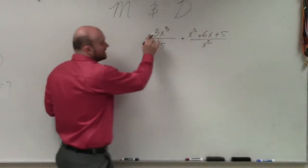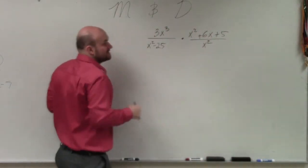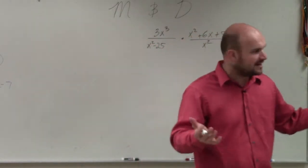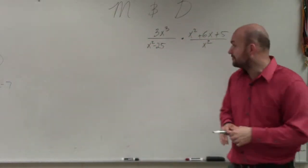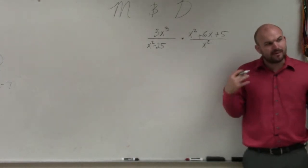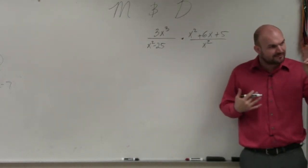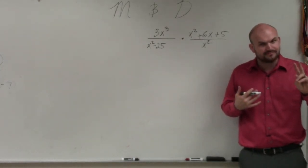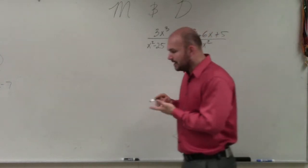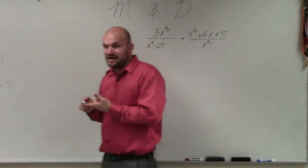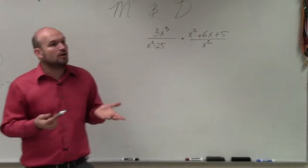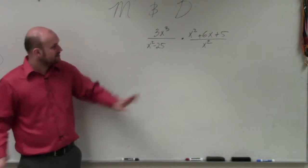So the first thing — we look at this. We see 3x cubed, which I cannot factor; I can't simplify that any further. And then we get to x squared minus 25. Now remember, whenever we have two terms, you're either going to want to factor using the GCF by factoring out what they have in common, or look for the difference of two squares.